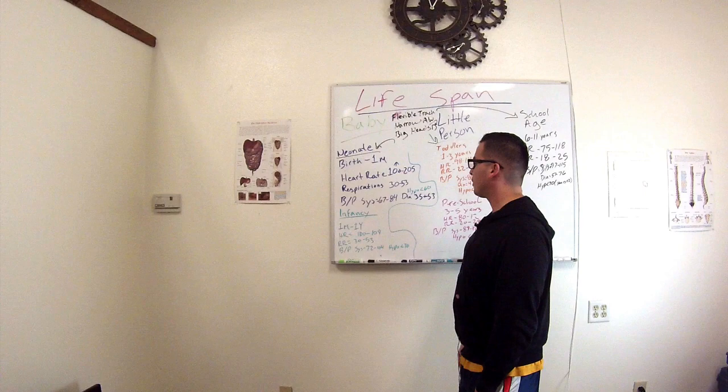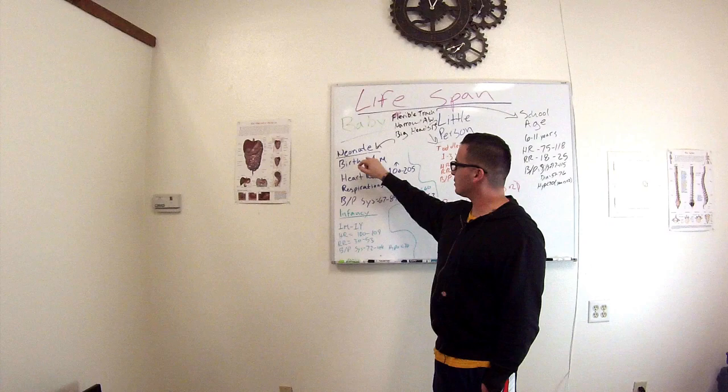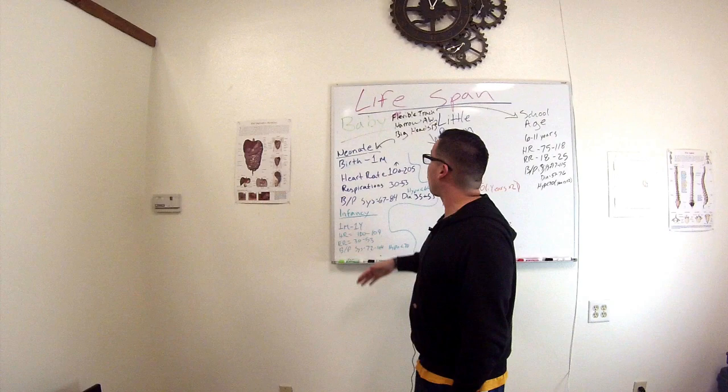The way I break these down for the younger side: you have your baby category, which includes neonates and infants, and then you have your little person category, which includes toddlers, preschoolers, and school-age individuals.